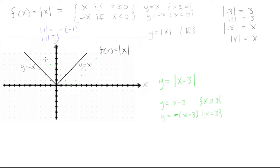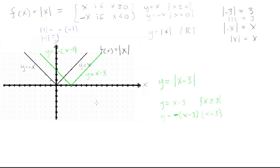You start seeing the same pattern — we're just going up in that direction. So we draw two lines meeting at a vertex: y = -(x - 3) on the left side, and y = x - 3 on the right side. Together, this whole green function is equal to the absolute value of x - 3.